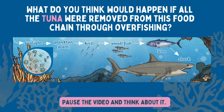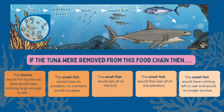What do you think would happen if all the tuna were removed from this food chain through overfishing? You might like to pause the video here and have a think about it. If the tuna were removed from this food chain, then the sharks would not survive as they would have nothing large enough to eat. The small fish would have no predator, so numbers would increase. The small fish would eat all the krill, then all the plankton, and would have nothing left to eat and would no longer survive.